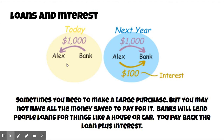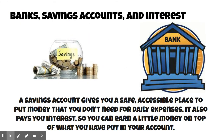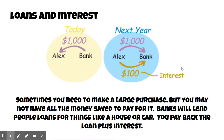We started talking about interest — we talked about interest yesterday. The interest we're talking about today is a little bit different, because yesterday we were talking about how when you put your money in a savings account, the bank will give you a little bit of extra money called interest. Today, we're talking about what happens when you take a loan out and have to pay back money to the person you borrowed from, and that's also called interest. Sometimes you need to make a large purchase but may not have all the money saved. Banks will lend people loans for things like a house or car, and you pay back the loan plus interest.